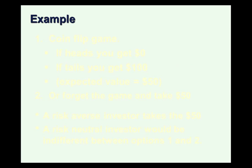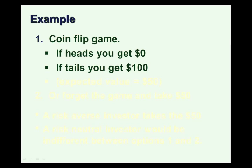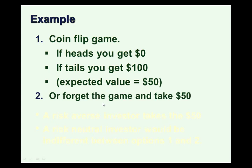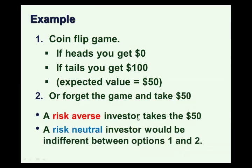Here's a simple example. Consider the coin flip game: heads you get $0, tails you get $100. The expected value of this game is 50% × $0 + 50% × $100 = $50. Suppose I give you the choice of playing this game or I just give you $50. A risk averse investor would always take the $50 — $50 certain is better than risking getting nothing. A risk neutral investor really wouldn't care between the coin flip game and the $50 up front. That's the key difference between risk averse and risk neutral.